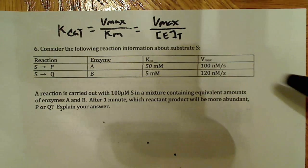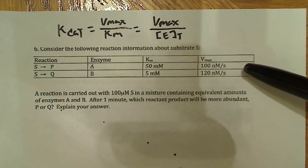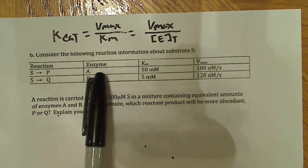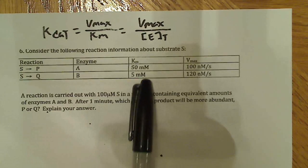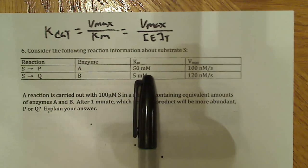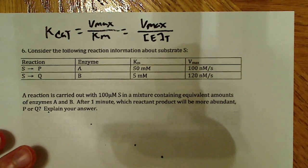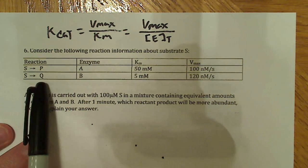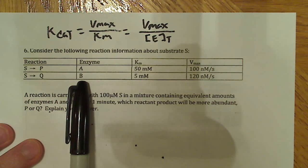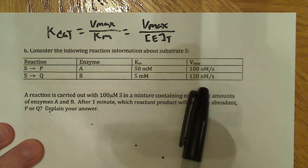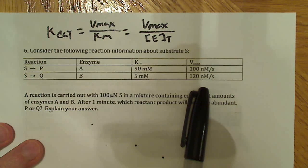Let's look at the data they're giving us. The reaction S to P, catalyzed by enzyme A, has a Km of 50 millimoles and a Vmax of 100 nanomoles per second. The reaction S to Q, catalyzed by enzyme B, has a Km of 5 millimoles and a Vmax of 120 nanomoles per second. So what does that tell us?